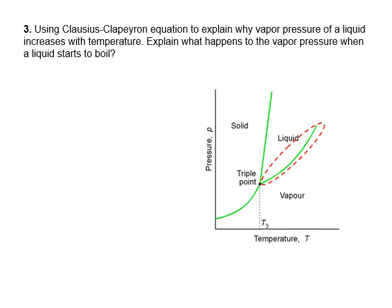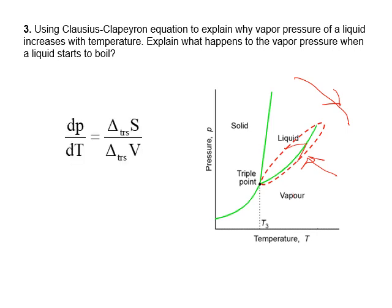Question number three: use the Clausius-Clapeyron equation to explain why vapor pressure of a liquid increases with temperature. Liquid vapor pressure change with temperature refers to this phase boundary. The Clausius-Clapeyron equation, dP/dT, is the derivative of pressure with respect to temperature, which means the slope of this phase boundary.